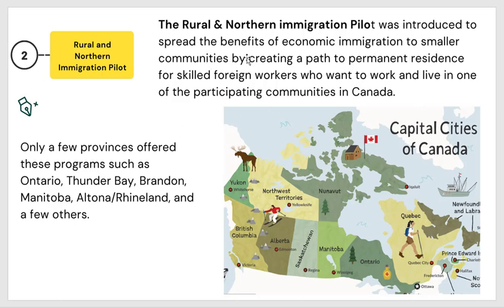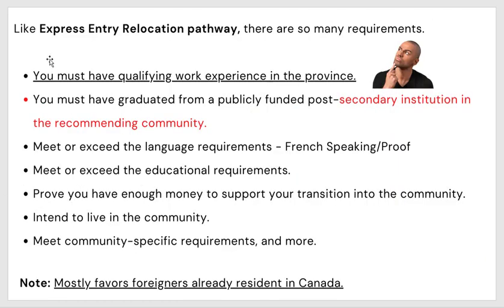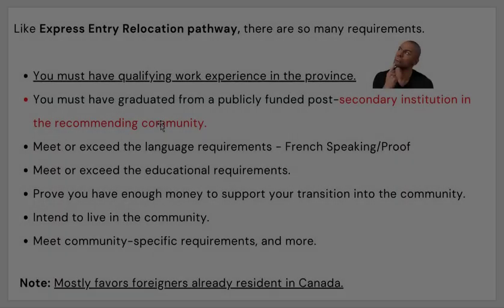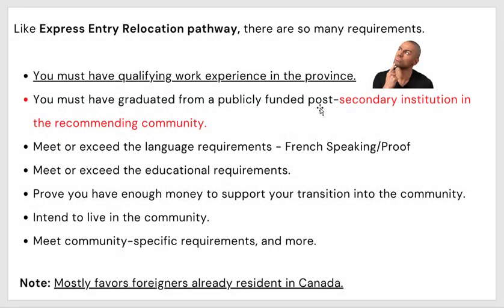The next program is the rural and northern immigration program. This was introduced to spread the benefits of economic immigration to smaller communities in Canada by creating a path to permanent residence for skilled foreign workers who want to work and live in one of the communities. Only a few provinces offer this program, such as Ontario's Thunder Bay. There are also a lot of requirements — you must have qualifying work experience in the province.